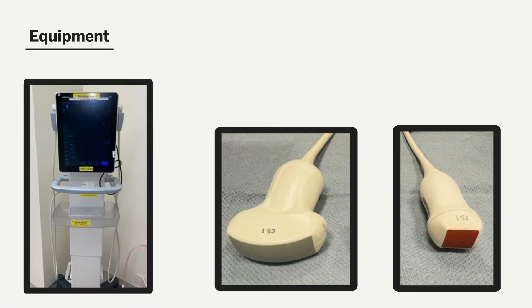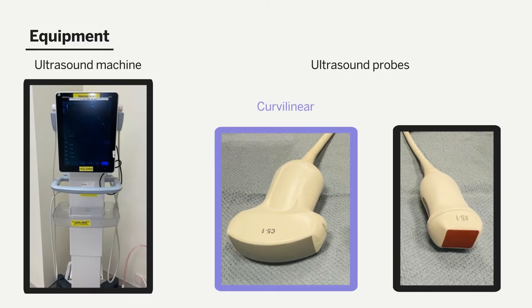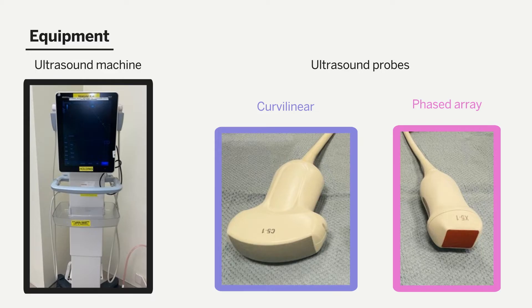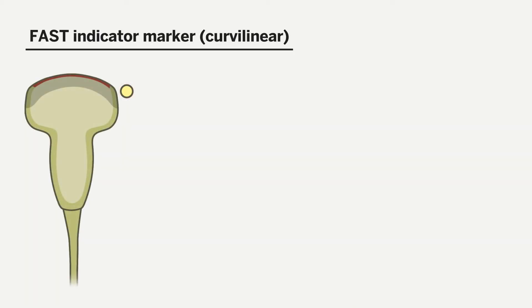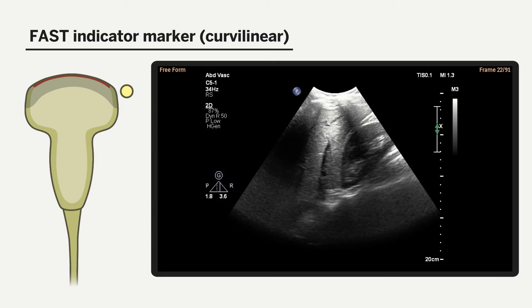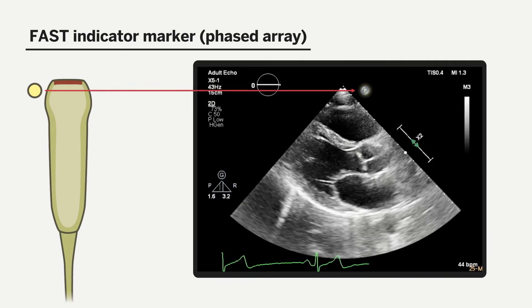In terms of equipment required for performing a FAST exam, you will need access to an ultrasound machine and the correct ultrasound probe. For abdominal scans, we generally choose the curvilinear probe, which is a low-frequency probe resulting in increased depth of penetration. Alternatively, the phased array probe, which is also a low-frequency probe, can also be utilized. It is important to note the location of the indicator marker on the probe and which side of the image this corresponds to on screen — for the curvilinear probe this is generally on the left, and for the phased array probe this is on the right of the screen.